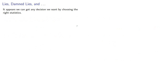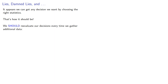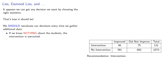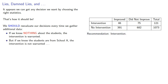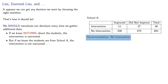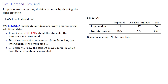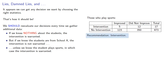It appears we can get any decision we want by choosing the right statistics. But that's how it should be — we should reevaluate our decisions every time we gather additional data. If we know nothing about the students, the intervention is warranted. But if we know the students are from school A, the intervention is not warranted — unless we know the student plays sports, in which case the intervention is warranted. There is no paradox.